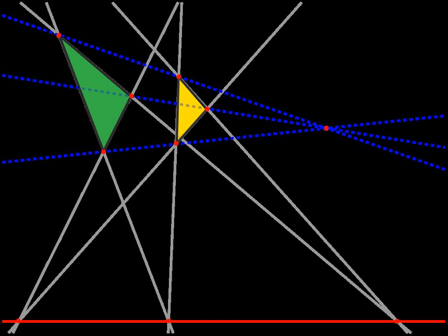This intersection theorem is true in the usual Euclidean plane, but special care needs to be taken in exceptional cases, as when a pair of sides are parallel, so that their point of intersection recedes to infinity.